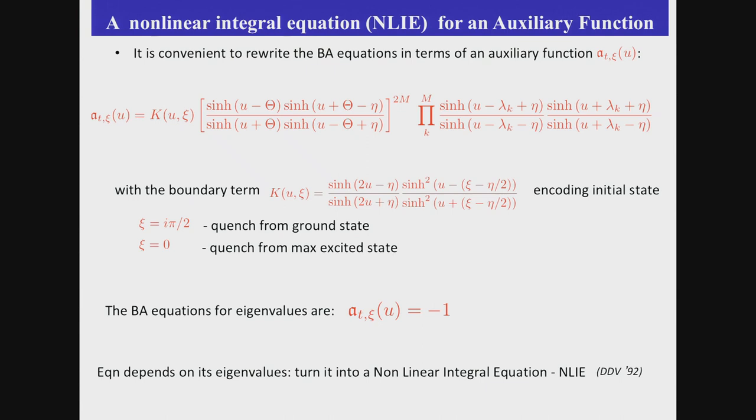so the two states that I'm going to characterize are given by phase psi, pi over 2 or 0. If you remember, this is the combination of up, down, down, up at the edge states. So the initial state, the quench from the ground state is characterized by psi i pi over 2, and the maximal excited state is psi equals 0.